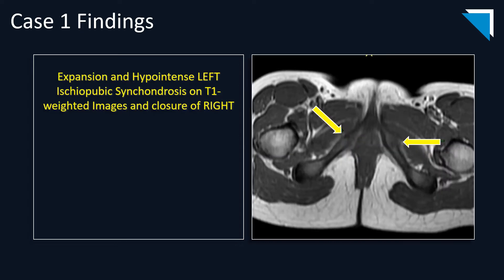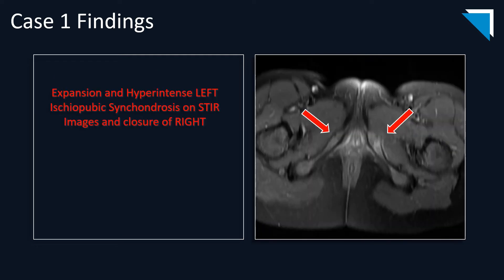On MRI, on this T1-weighted sequence, you can see asymmetrical closure of the right ischiopubic synchondrosis and expansion with hypointense signal in the left ischiopubic synchondrosis. On this STIR image, you can see edema and hyperintense signal surrounding the left ischiopubic synchondrosis and closure of the right ischiopubic synchondrosis.